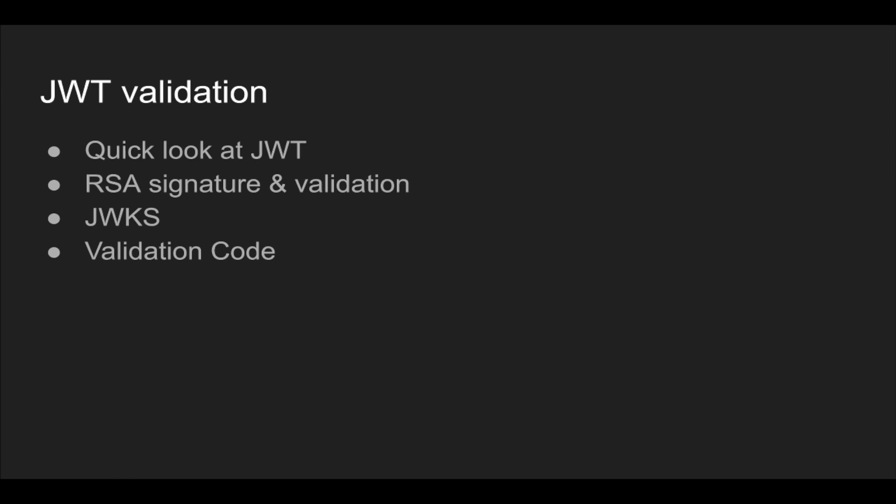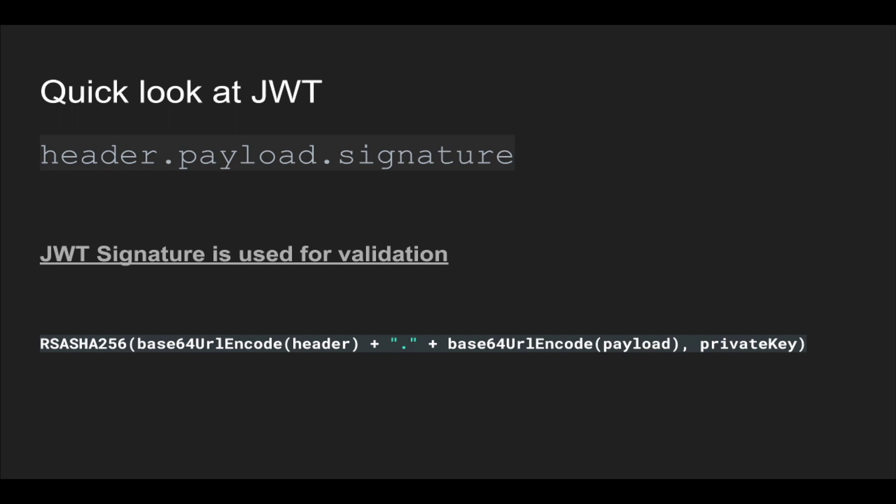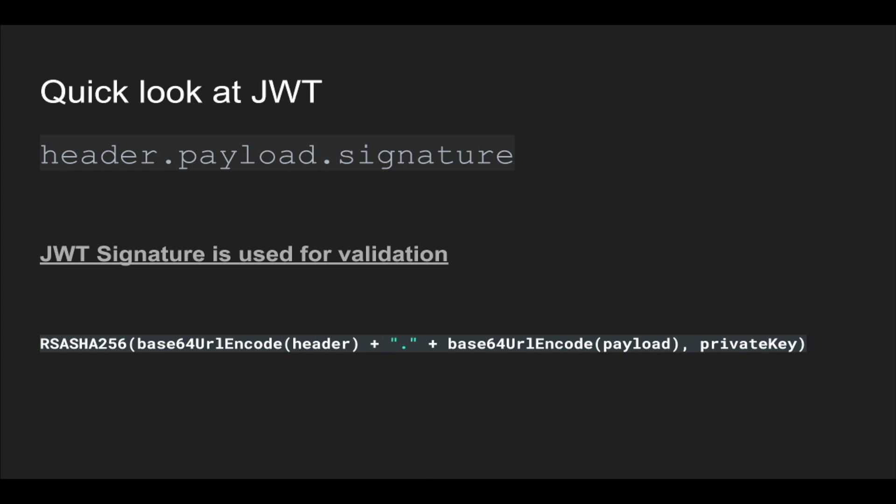A JWT consists of three parts: a header, a payload, and a signature. We'll concentrate on the signature right now because that is what is used for validating the JWT. To create a signature, at the bottom here I have a pseudocode which shows that we take RSA-SHA — basically we're calculating a SHA corresponding to a base64 URL encoded header and payload — and when calculating the SHA we use a private key.